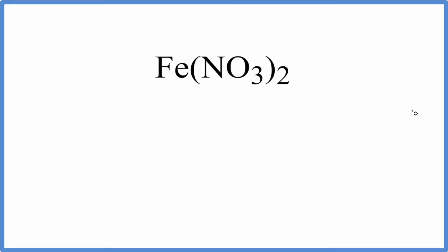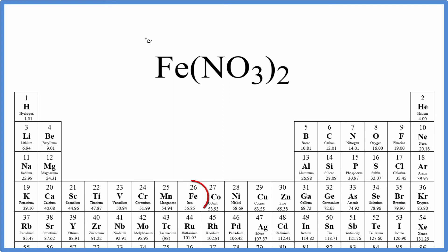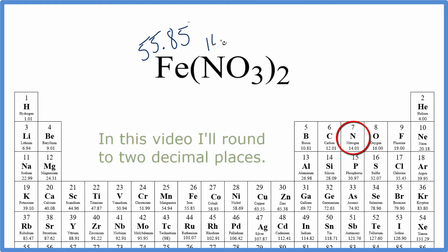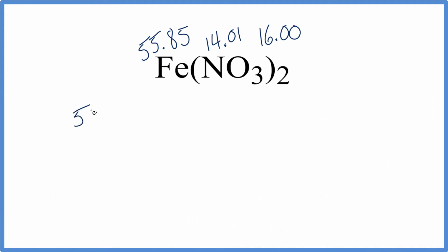For iron(II) nitrate, to find the molar mass or molecular weight, we go to the periodic table. Iron is 55.85 grams per mole, nitrogen is 14.01, and oxygen is 16.00 grams per mole. We'll write 55.85 for iron.